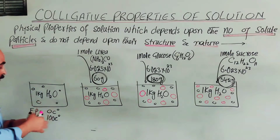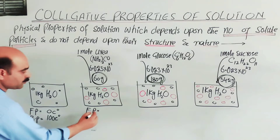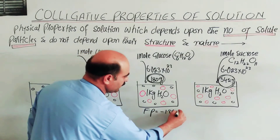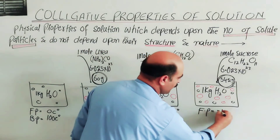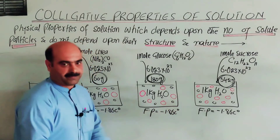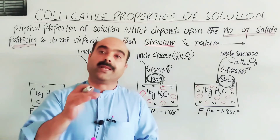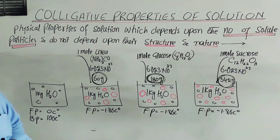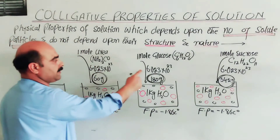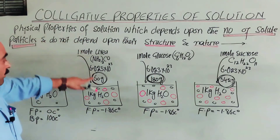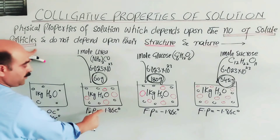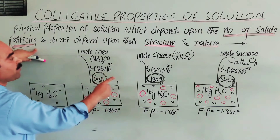What is the freezing point of these solutions? The freezing point is minus 1.86 degrees C. So, due to the addition of solute, the freezing point of the solution decreases — this is called depression in freezing point. Importantly, all three solutions show the same depression because they have the same number of solute particles. This demonstrates that freezing point depression is a colligative property — it depends upon the number of solute particles.